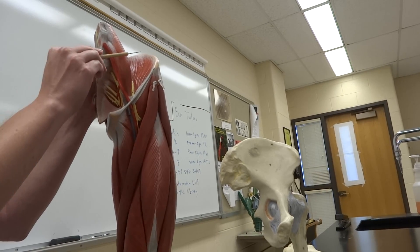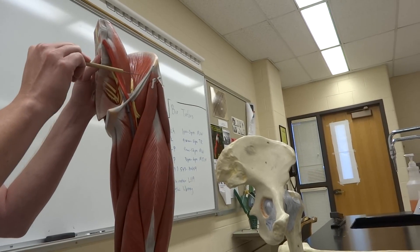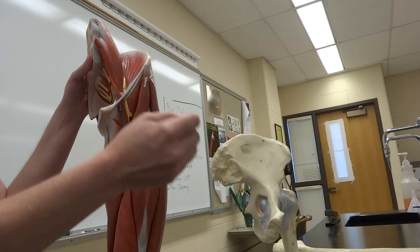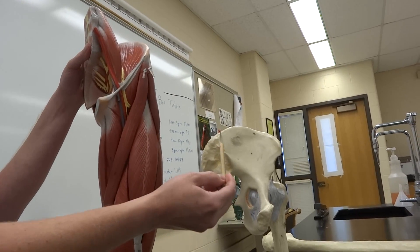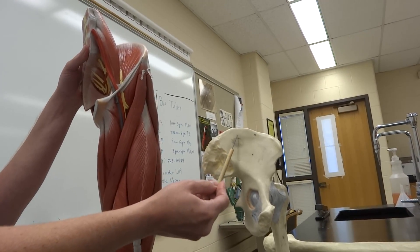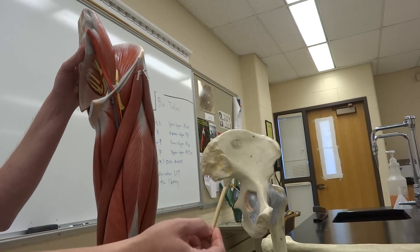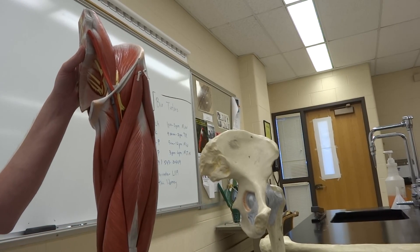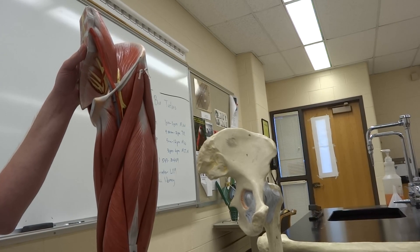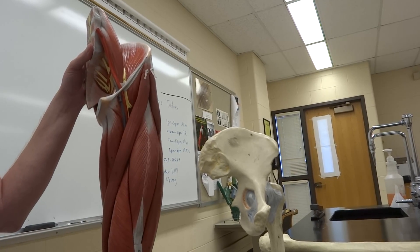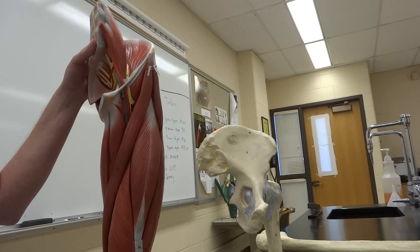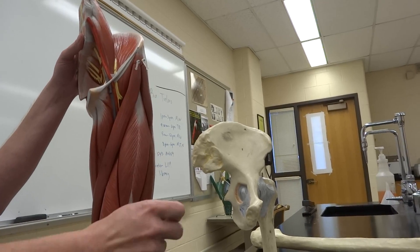The iliopsoas is going to originate on the iliac fossa and crest of our ilium. It's also going to originate on the sacrum and along the vertebral column at T12 and L1 through L5, which is lumbar. Now it's going to insert at the lesser trochanter of the femur.